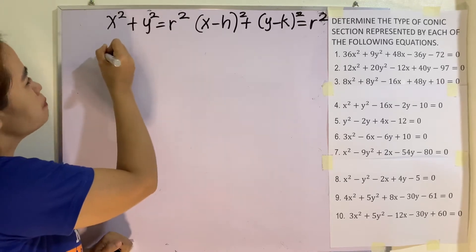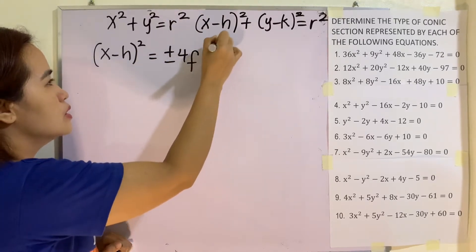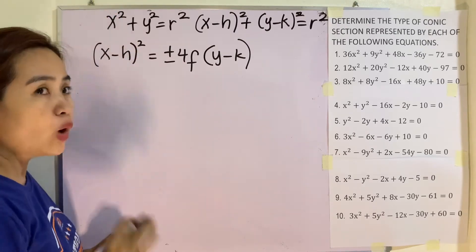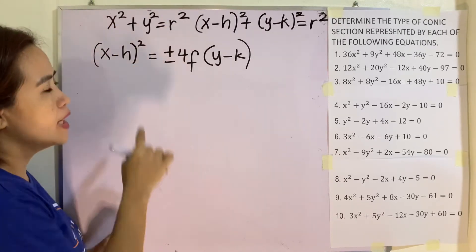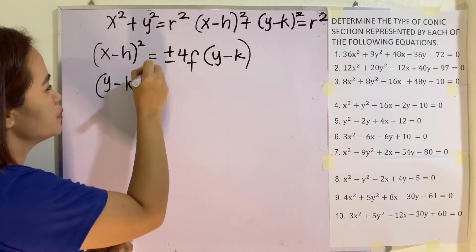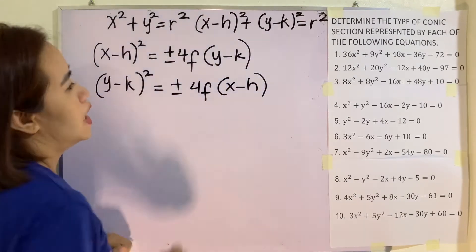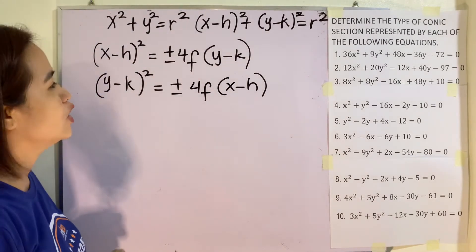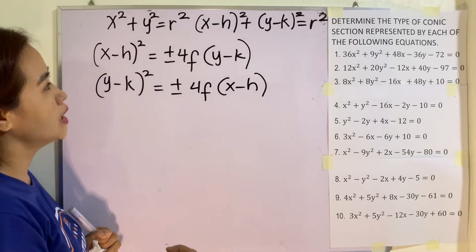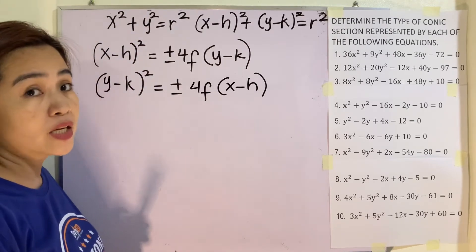Next, parabola. We have x minus h squared is equal to positive or negative 4f times quantity y minus k, if the parabola will open upward or downward — positive 4f if upward, negative 4f if downward. For left or right, we have the formula y minus k squared is equal to positive or negative 4f times quantity x minus h. This is exclusively for parabola. Take note: either x is squared or y is squared — not both. So if you see an equation where either x is squared or y is squared, it is a parabola.